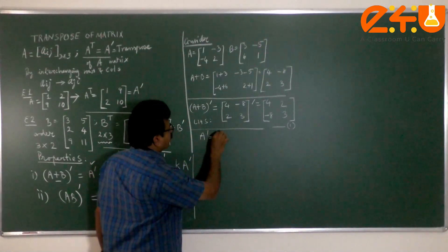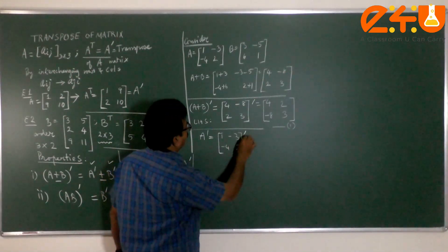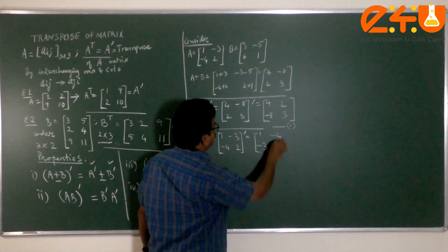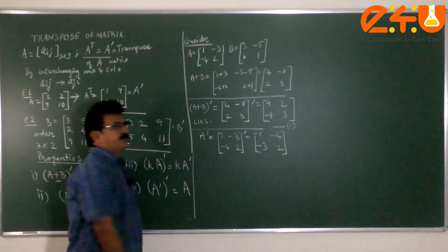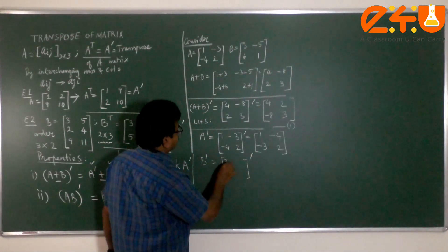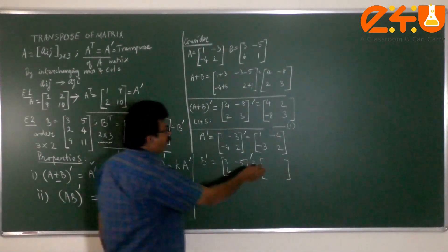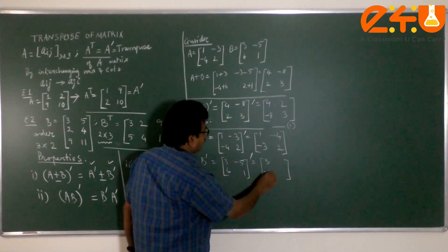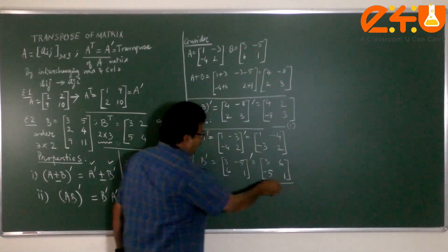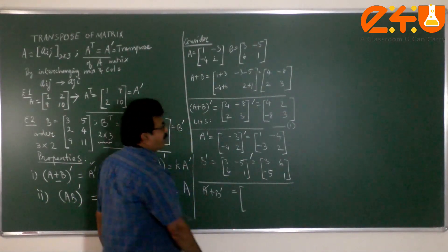What is A transpose? That is 1, minus 3, negative 4 and 2, whole transpose. Row 1 written as column 1. Row 2 written as column 2. What about B transpose? The given B we are going to do the transpose. That is first row has 3 and minus 5, second row has 6 and 1. And when you transpose, row 1 written as column 1, second row as second column. And I would like to add them, A transpose and B transpose.